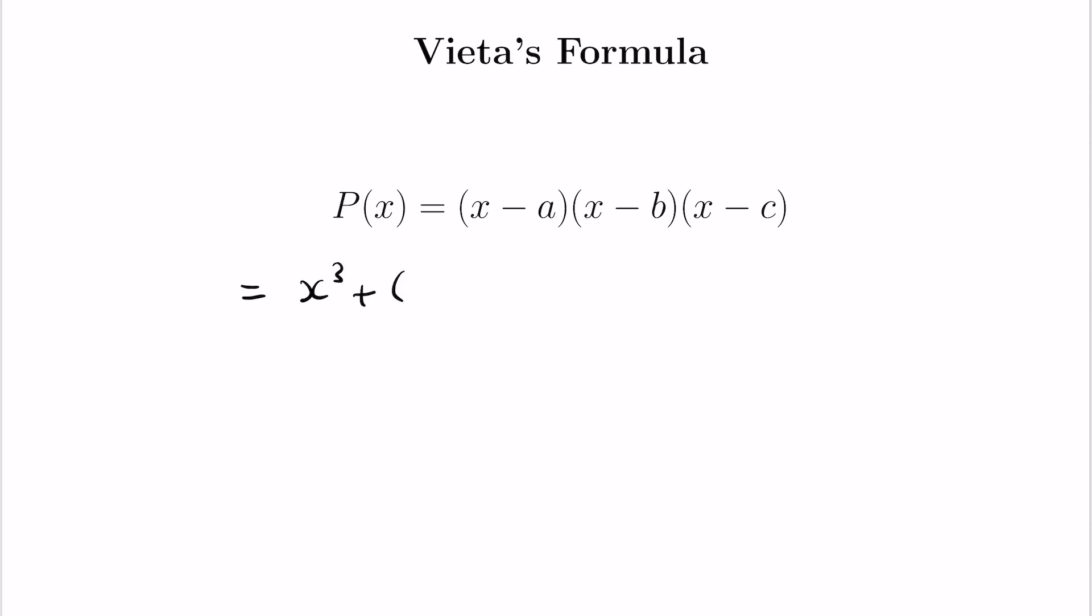Now what is the x squared term? A contribution of x squared comes up when we select exactly two of these x's from two of the binomials and then a not x term from the other. So for example negative c will appear with a coefficient of x squared and so will negative a and so will negative b.